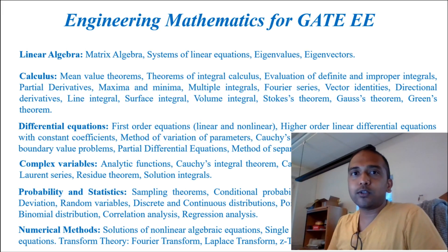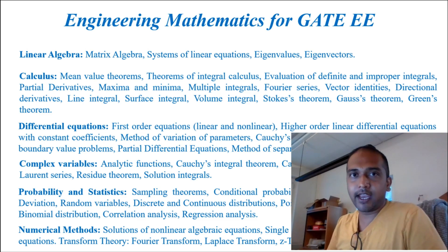So now let's look at what is the weightage of different subjects in electrical engineering GATE exam. This is a pie chart of subject-wise weightage of different topics that appear for GATE exam electrical engineering. First you have the general aptitude appearing for 15 marks, and then you have engineering mathematics appearing for 12 marks.